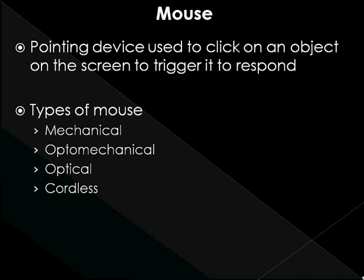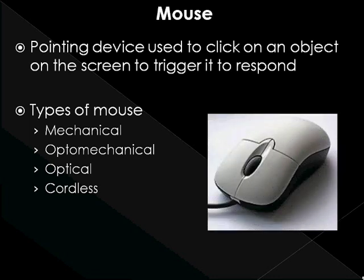Cordless mouse: it is not physically connected at all. It is a battery-powered device that transmits data using wireless technology. However, the mechanical, opto-mechanical, and optical mouse types are more or less the same as shown in this figure. The only difference for the cordless mouse is that it looks the same as in this picture, but without any wires.